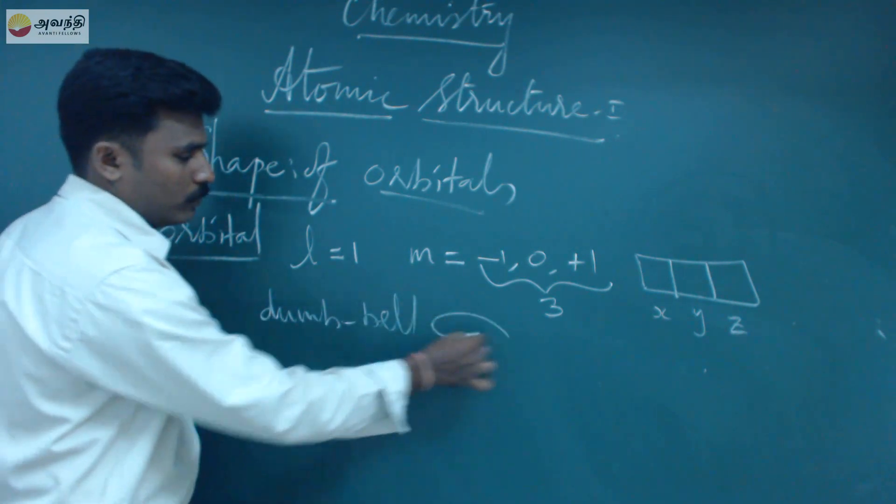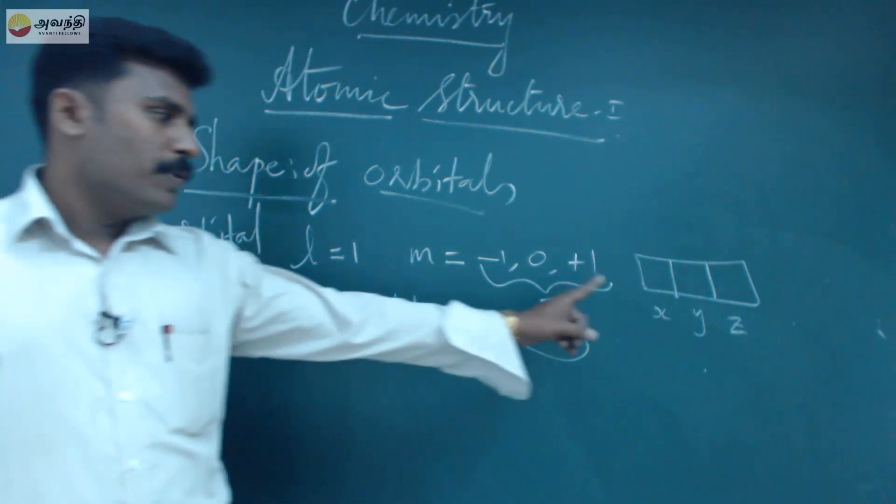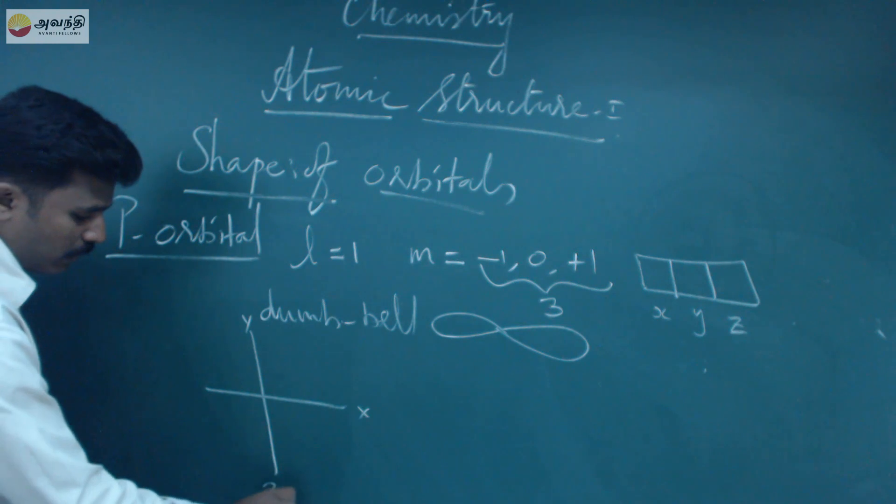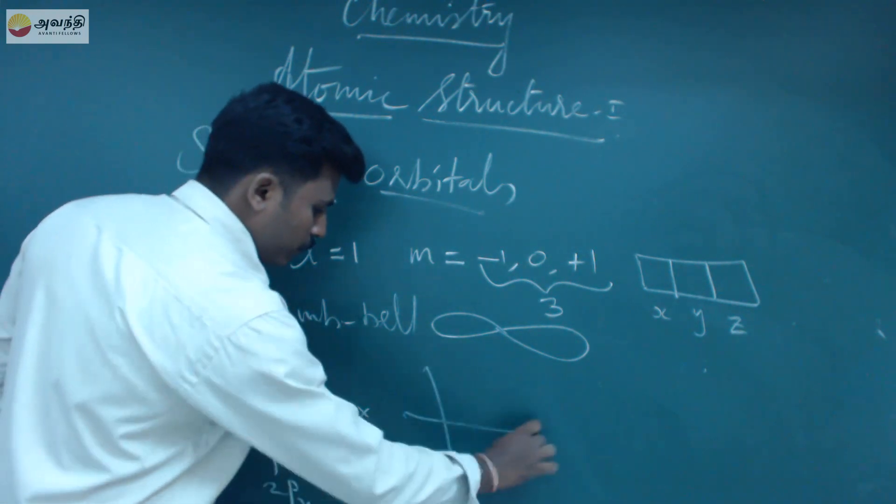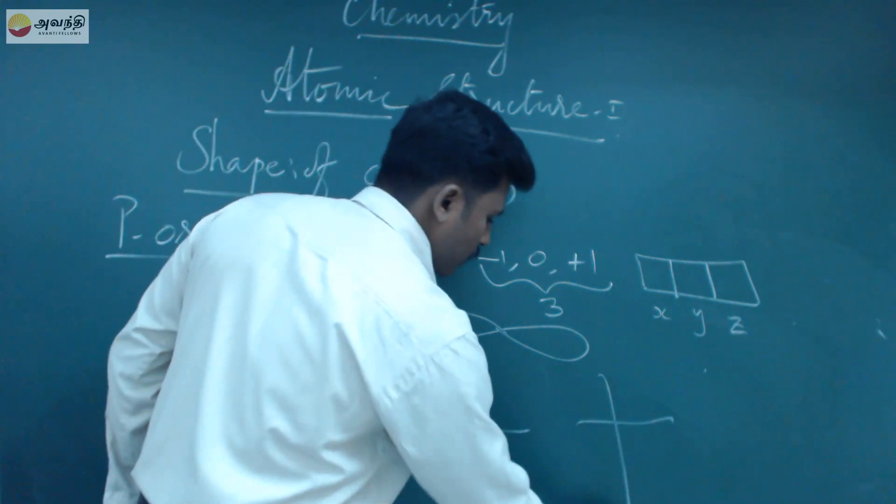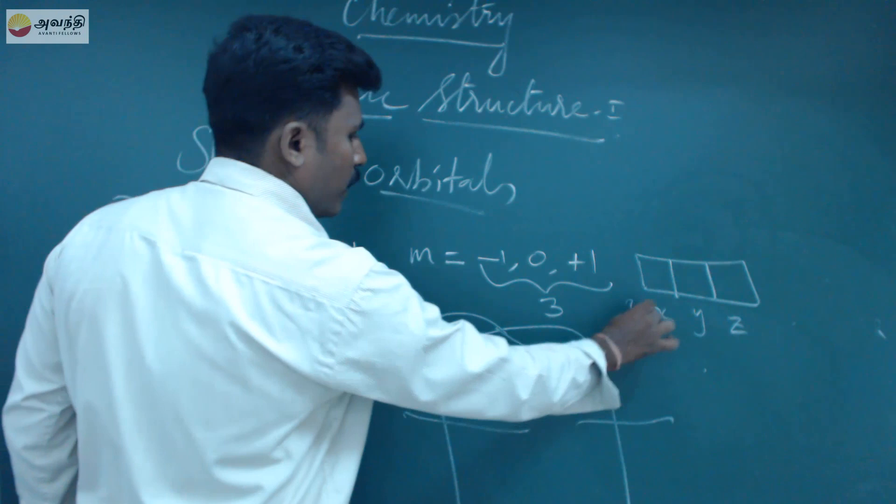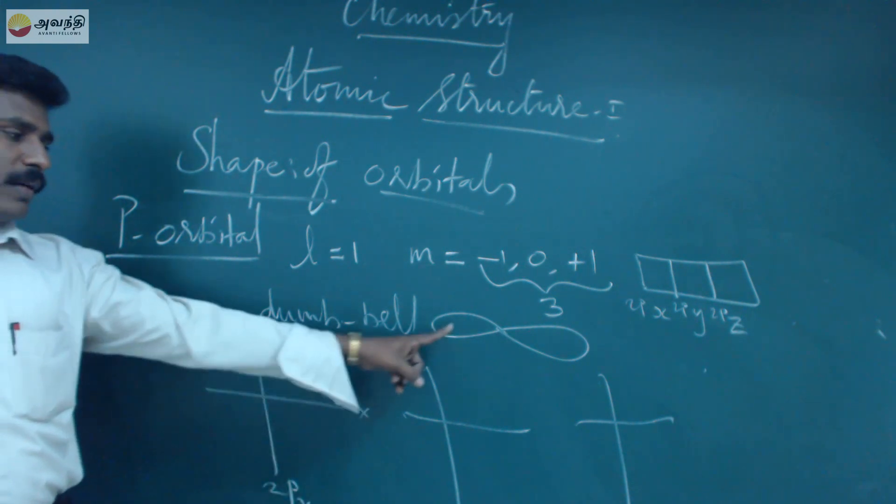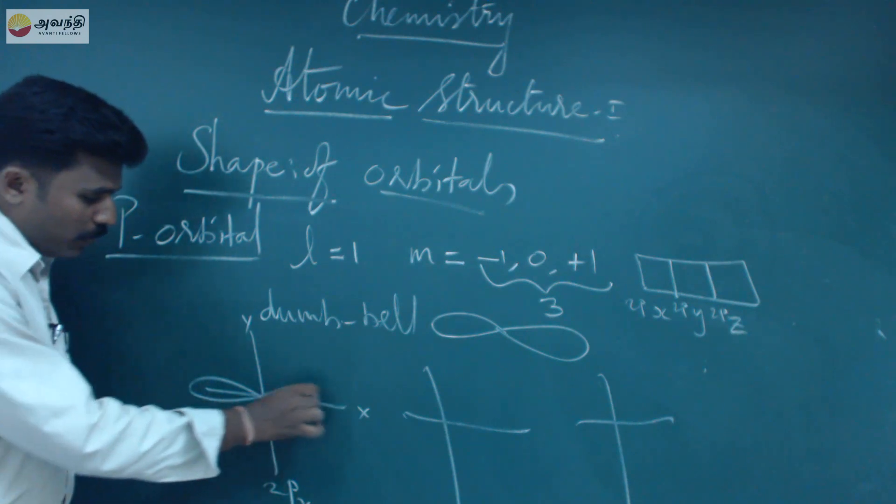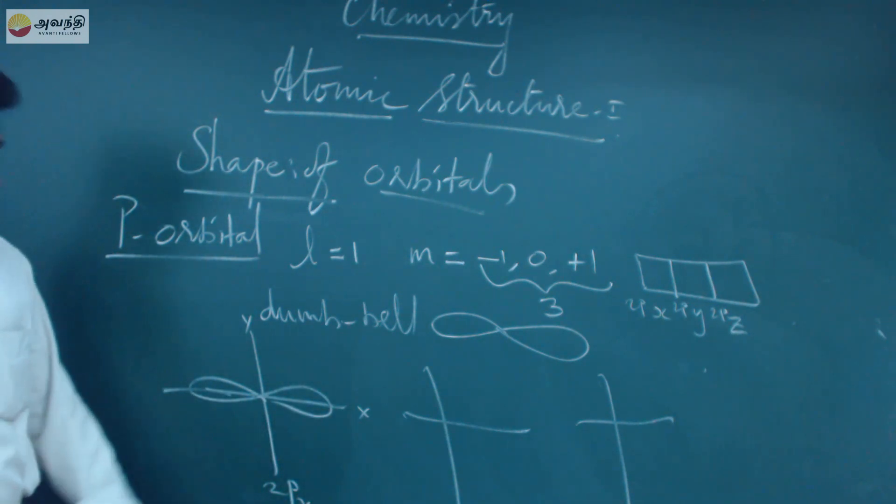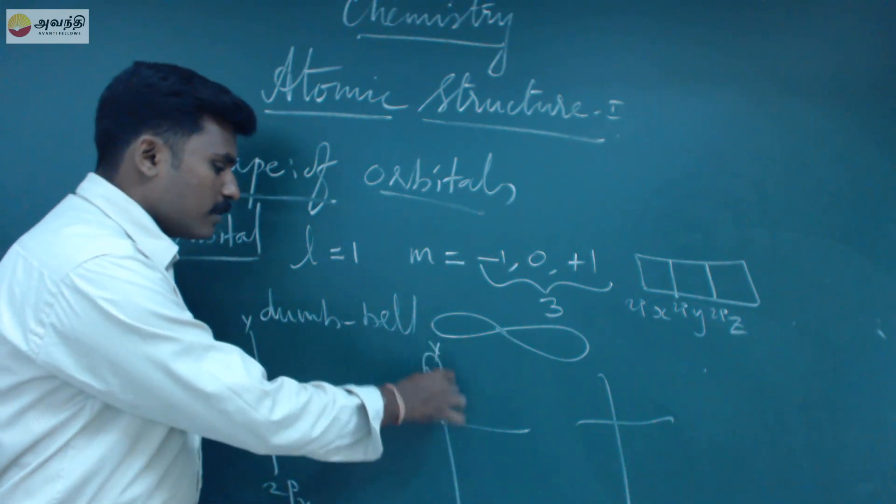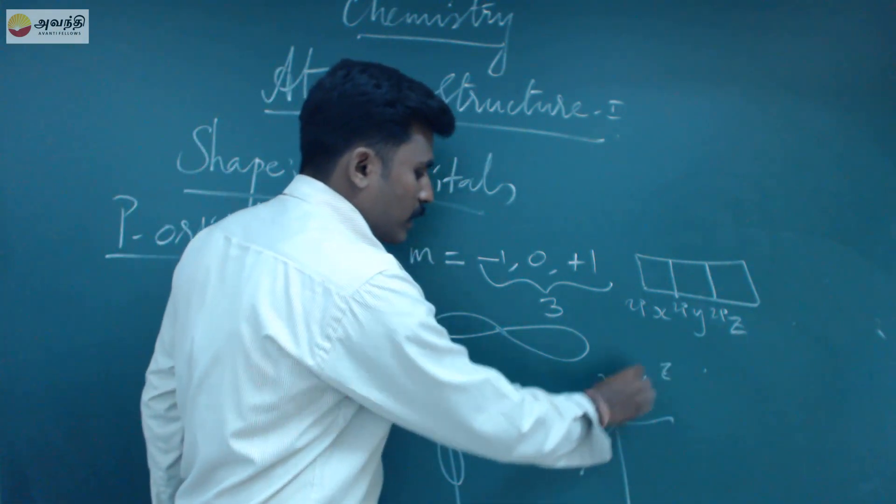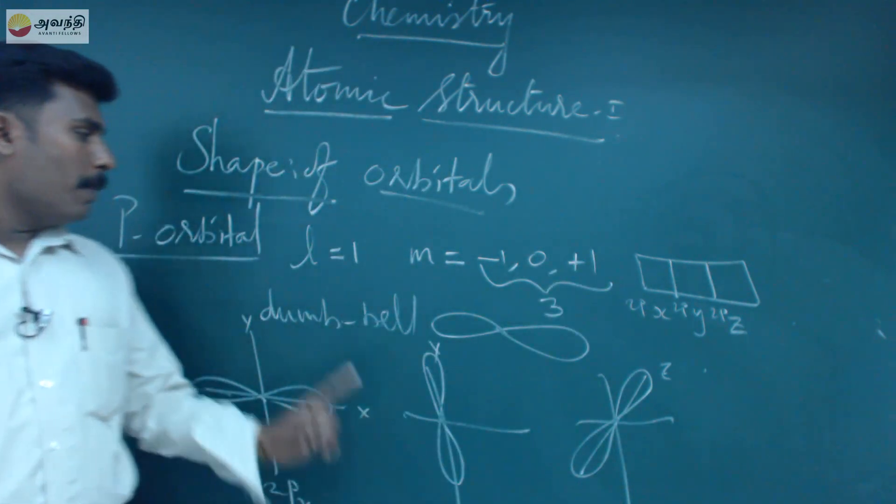The shape is dumbbell shaped. Looking at px, py, and pz: this is the x axis, this is the y axis. This is 2px, this is 2py, and this is 2pz. For 2px, the diagram shows dumbbell shape along the x axis. If you want py, this is the y axis. If you want pz, the z axis shows the shape of the p orbital.